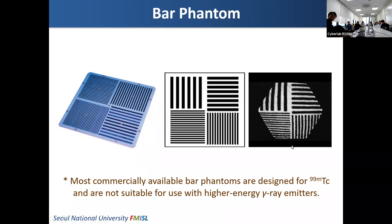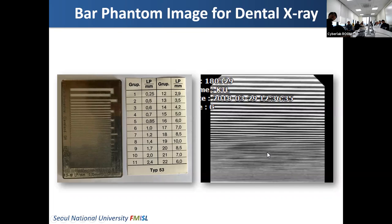This is another bar phantom — a very fine bar phantom used in x-ray CT. When scanning, at some point we cannot distinguish the bar phantoms. Using this kind of phantom, we can estimate what the spatial resolution is.